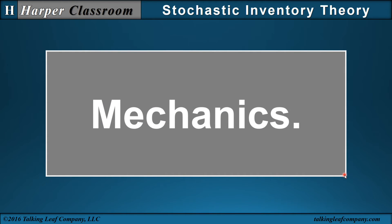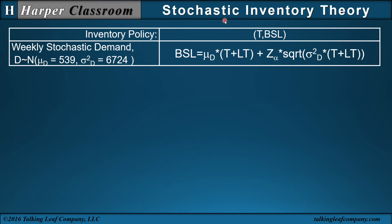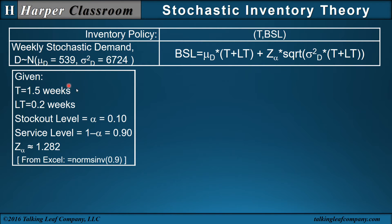So let's look at some mechanics and solve a problem. Suppose we have a weekly stochastic demand normally distributed with a mean of 539 and a variance of 6724. Given an inventory period of 1.5 weeks, a lead time of 0.2 weeks, a stock-out level of 10%, which results in a service level of 90%, and the z value is 1.282, which we will calculate using Excel.